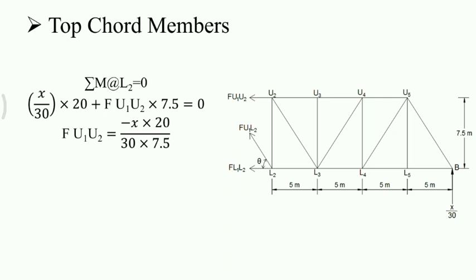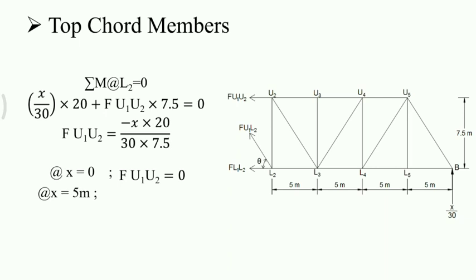We need to draw the influence line diagram for member U1U2, so we determine the ordinates. At X equal to 0, since the origin is A, the ordinate is 0. At X equal to 5 meters — the limit was 0 to 5 — the ordinate is minus 0.444.